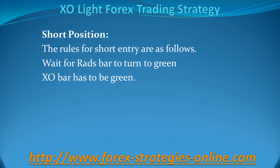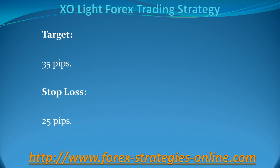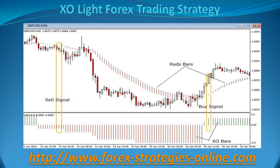Strategy for short position. The rules for short entry are as follows: wait for RADS bar to turn red, XO bar has to be red. Target: 35 pips. Stop loss: 25 pips. In the picture you can see that RADS bar turns to red and XO bar becomes red — this is your sell signal.